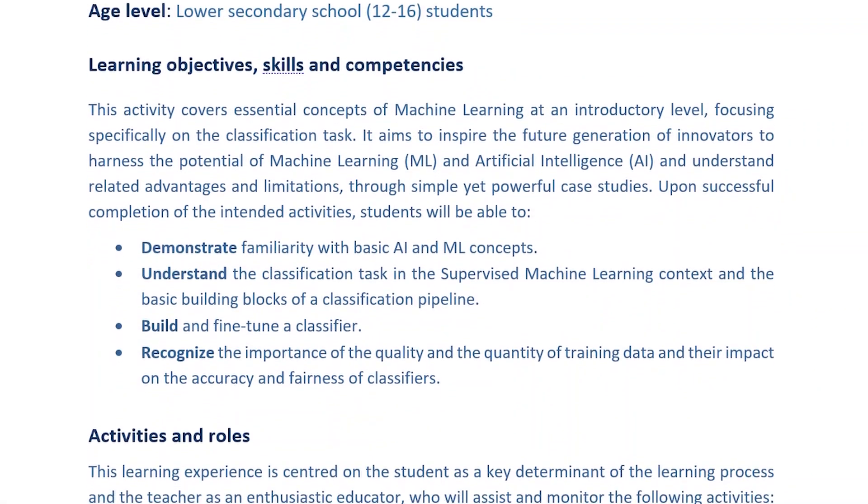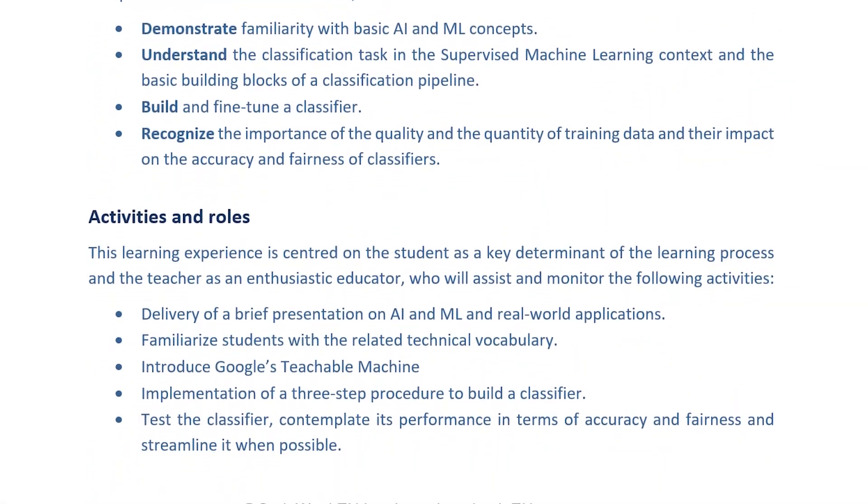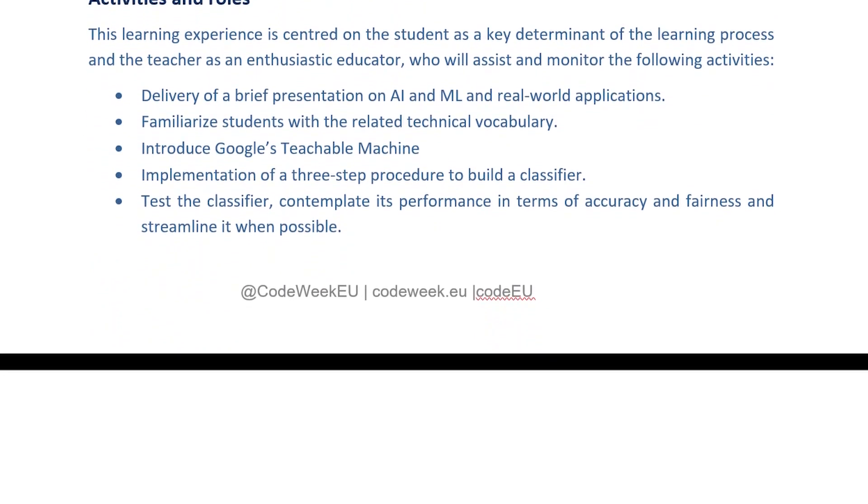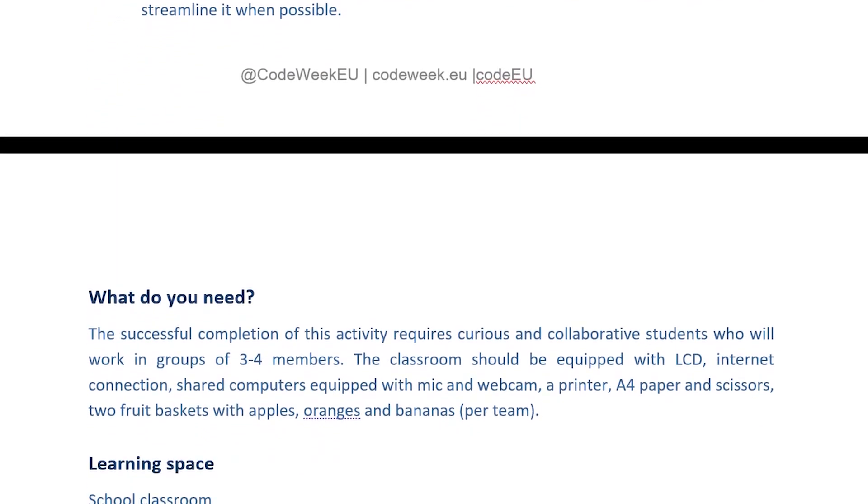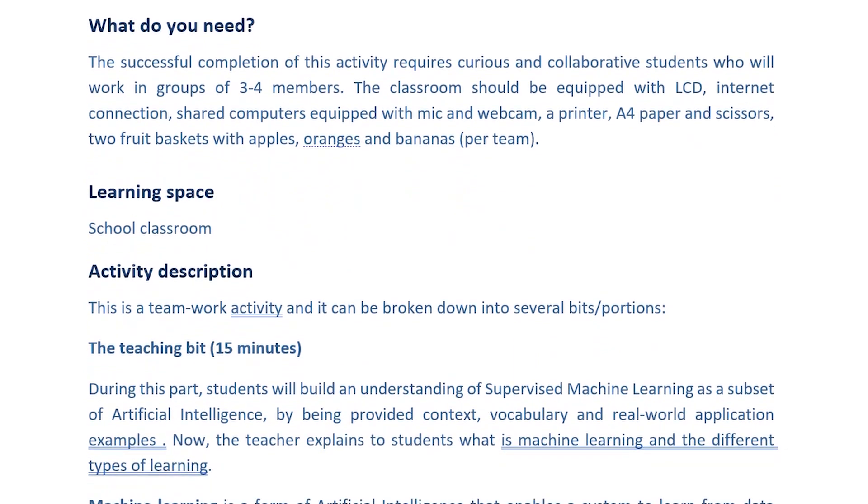Can a machine tell the difference between an apple and a banana? It can, and your students will learn to teach the machine to do so. This activity will help you teach your upper and lower secondary school students about machine learning and artificial intelligence. They will build a smart classifier of fruits or of vehicles using Google's Teachable Machine. You can also modify the activity to build classifiers of other elements such as musical instruments, books, beverages, moods or poses.